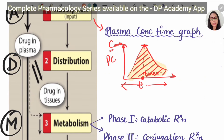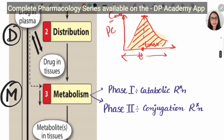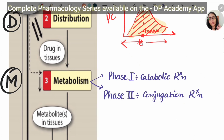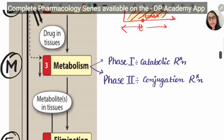Distribution is when the drug is distributed into the tissues. The amount of drug going to the tissues is the distribution. In this, we talk about the volume of distribution and loading dose. Volume of distribution is calculated as the amount given by the IV route divided by the plasma concentration.